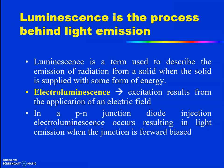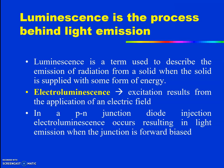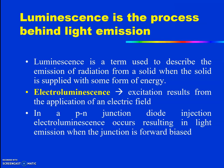Luminescence is the process behind light emission — it is the emission of radiation from a solid when the solid is supplied with some form of energy. Electroluminescence is the excitation of electrons or holes by the application of an electric field. When a certain electric field is supplied, the charge carriers get excited, they recombine, and energy is released in the form of light. In a p-n junction diode, injection electroluminescence occurs resulting in light emission when the junction is in forward bias.